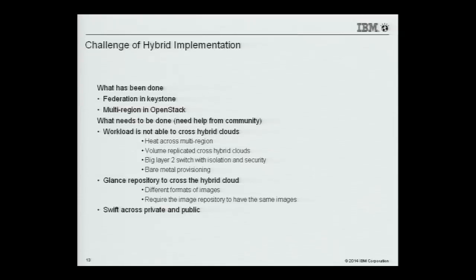We probably need some help — what is the challenge of hybrid implementation? First, what we have done: this morning there was a lot of discussion of federation — that's a pretty good implementation, the framework is nice. We just need to federate more identity services. And multi-region is there — we can fully deploy multi-region OpenStack with the same Horizon. But what we haven't done yet: Heat across multi-region is not fully implemented. There was a blueprint in Icehouse talking about this cross multi-region implementation, but the code was reverted. I don't know why — it seems to keep being abandoned and recovered.